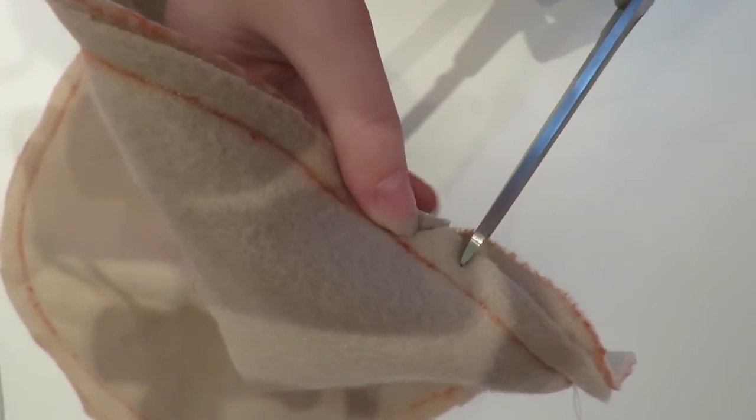So what we're going to do is clipping. What that is, you just do tiny snips, but don't go into your sewing or where you've glued—just on the outside. That will stop you getting puckers in your fabric and it will be nice and smooth.